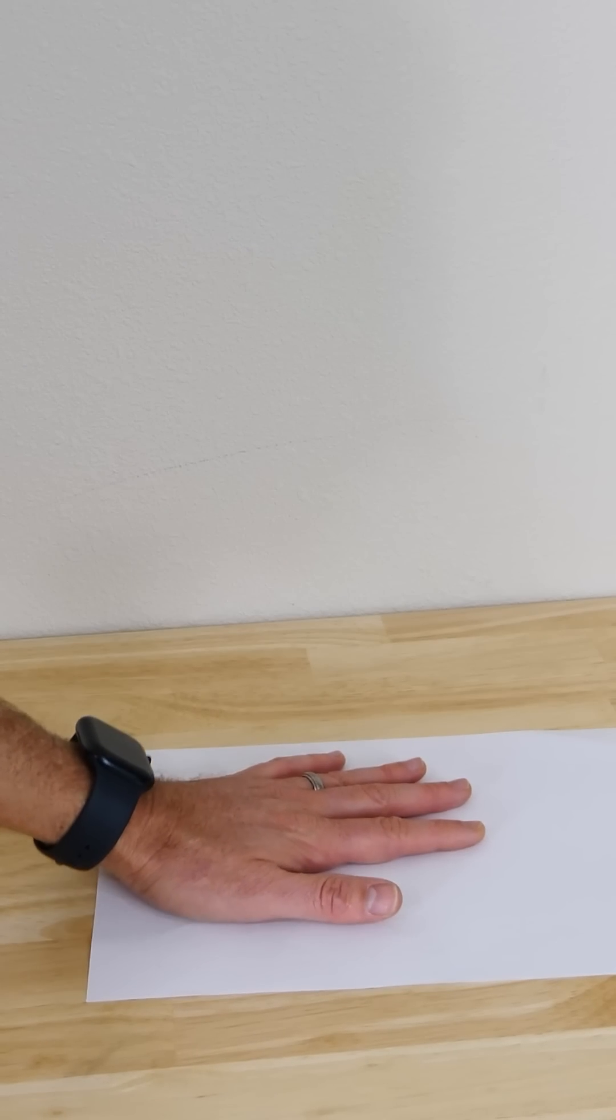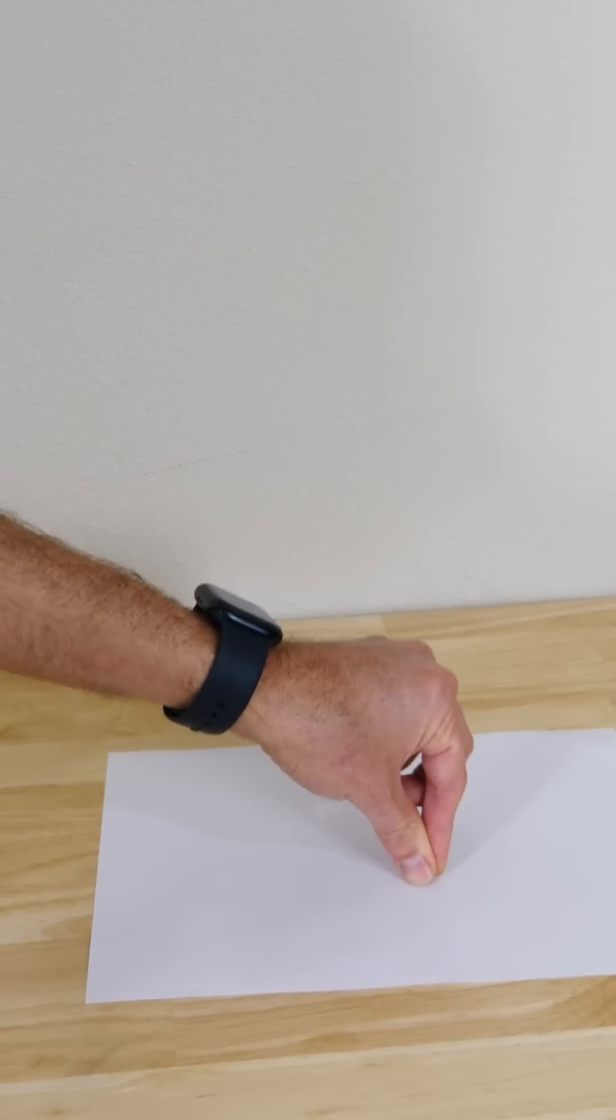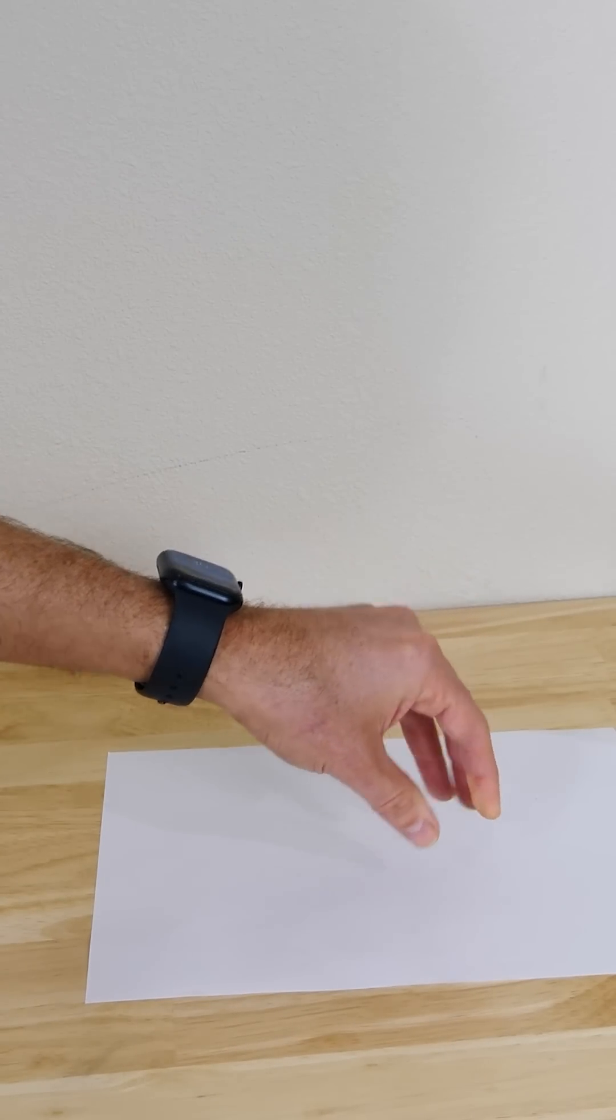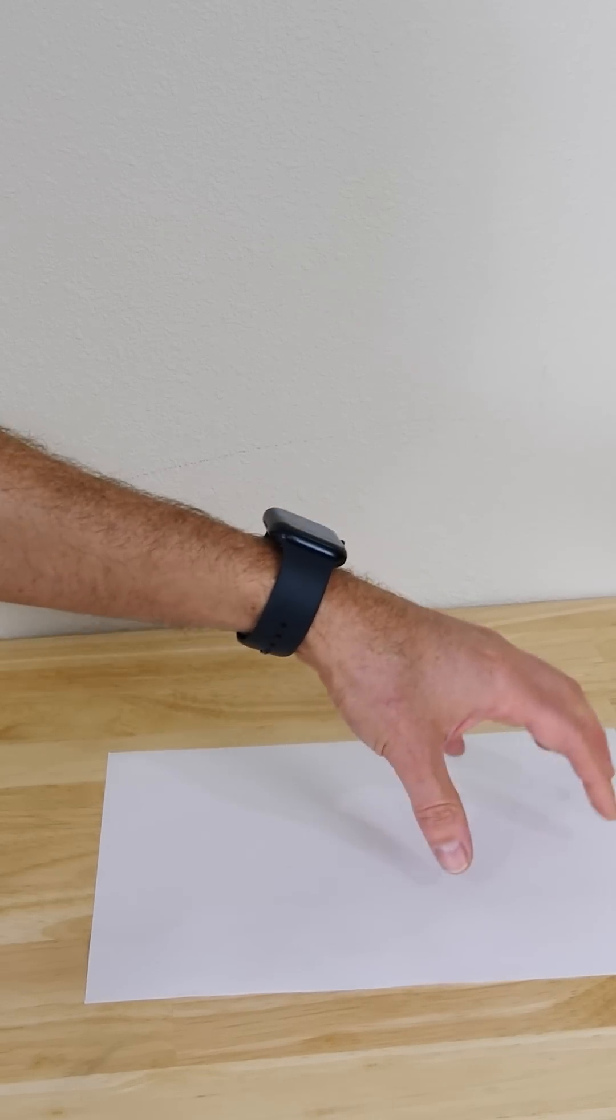So when you lay a piece of paper like this on the table, there's barely any air trapped underneath it. But when you try to pick it up from the center like this, you're increasing the volume of the air underneath.